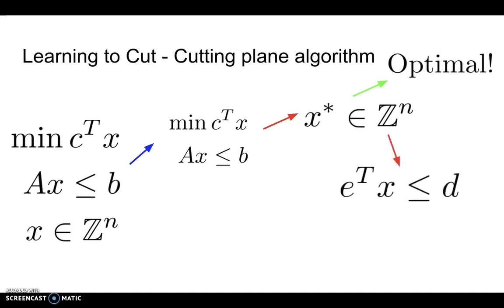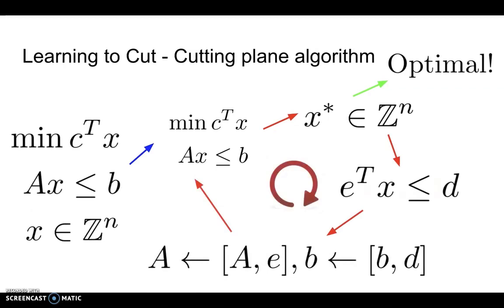Otherwise, we could always find new constraints. We can add these new constraints to the original system, and re-solve the LP. We keep iterating like this until the algorithm terminates. This new set of constraints that we can add to the original system, we call it cutting planes, or cuts for short.